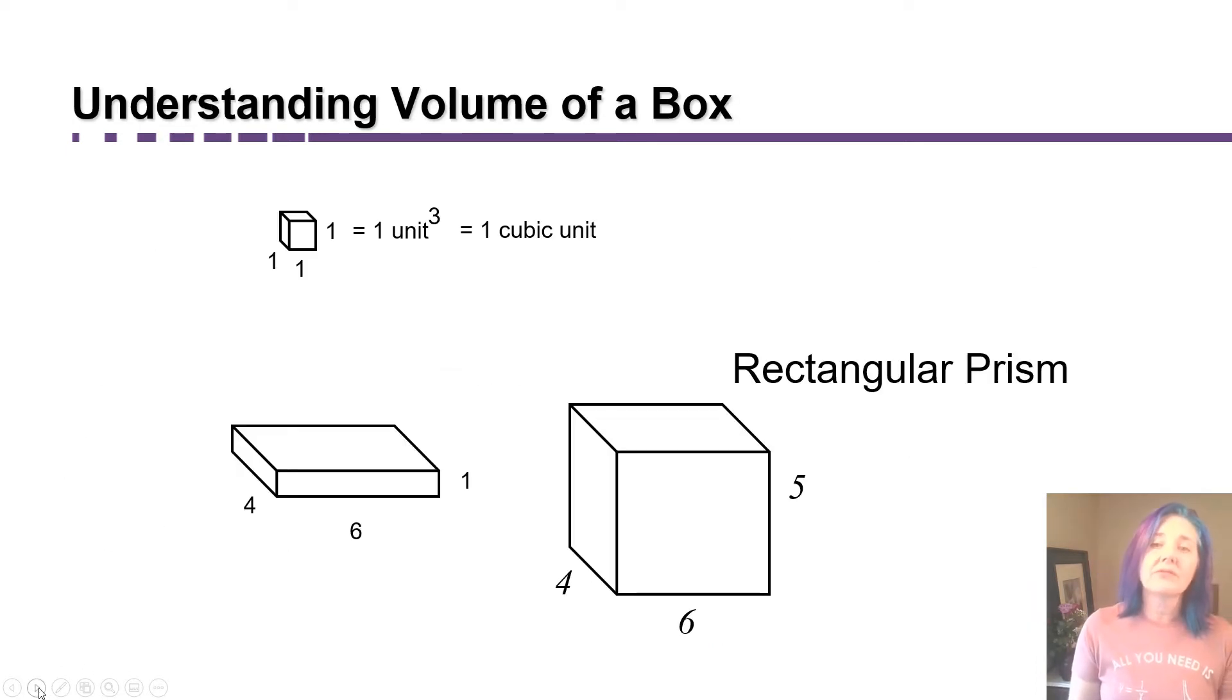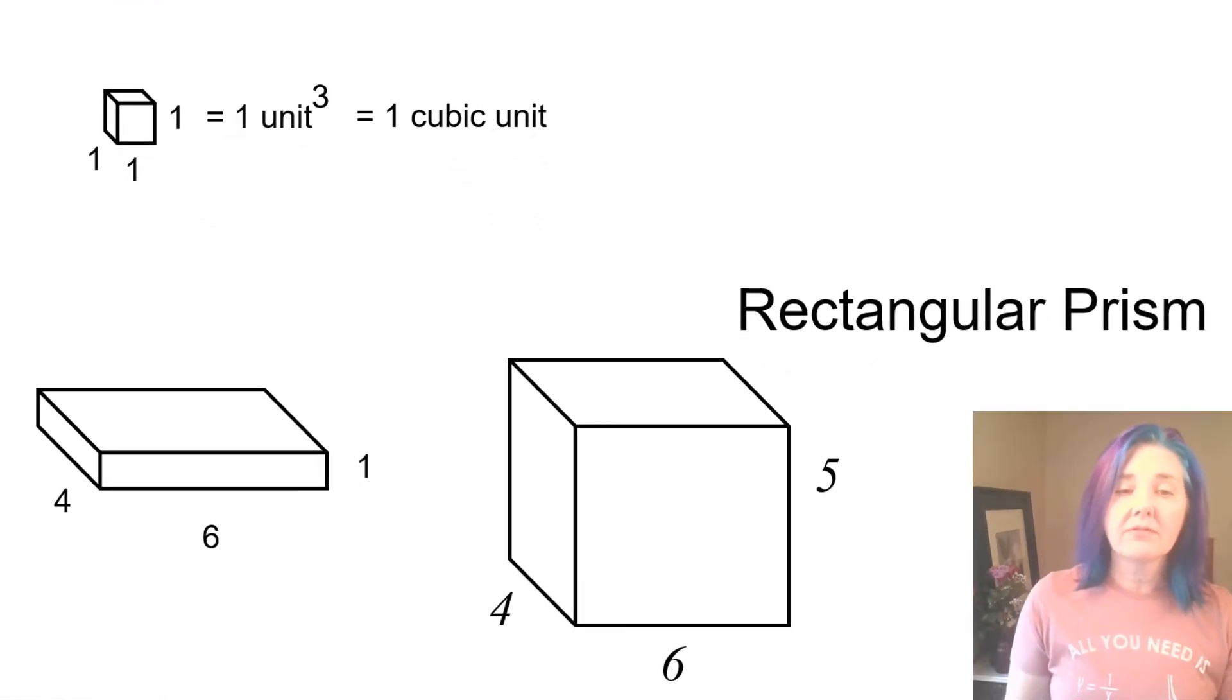To understand how we find the volume of a box, I want you to visualize a box or rectangular prism that's four units by six units by five units. My goal is to get the volume of that four by six by five box. But instead of looking at that first, we're going to look at a layer of it that's only one unit tall or thick. To find the volume, we want to figure out how many little cubes will fit into the box. So we're going to start with how many cubes fit into just one layer. I'm going to take these little cubes and line them up. Since the box is six units across, I'm going to be able to fit six little cubes across the front of that one layer.